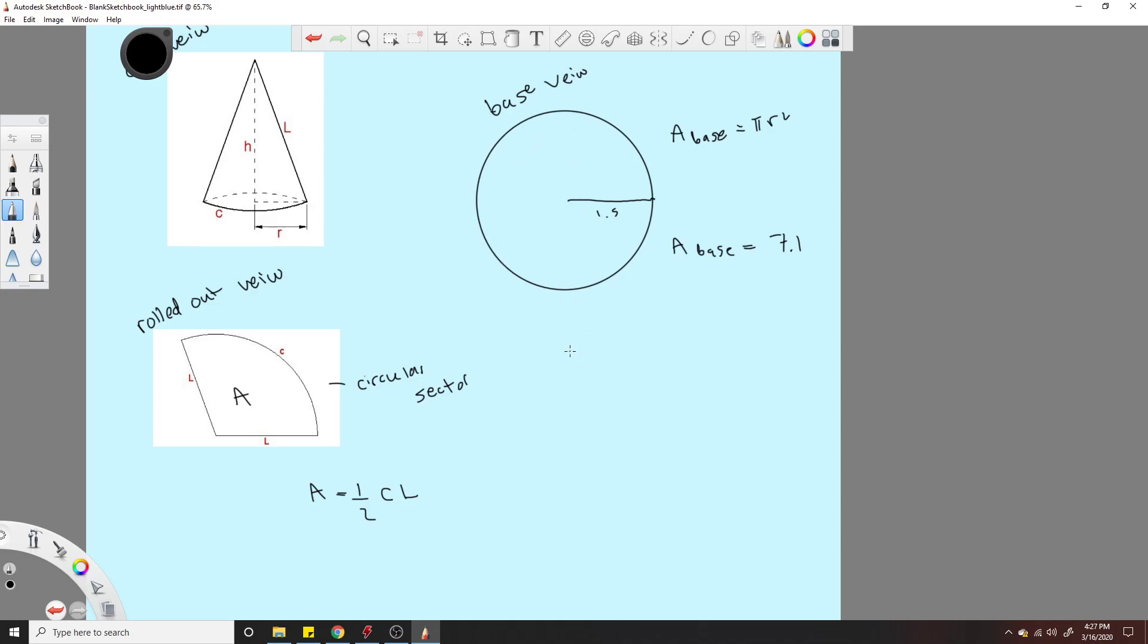That would be 2 pi r. So C is going to be 2 pi times 1.5. So 2 times pi times 1.5, 9.4 meters. Okay, we have the C.